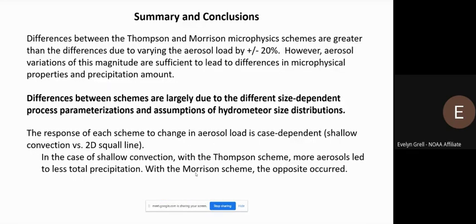To summarize: differences between the two microphysics schemes are greater than differences due to varying aerosol load by 20%. However, aerosol variations of this magnitude are sufficient to lead to differences in microphysical process properties and precipitation amount, which should lead to changes in the radiative response. The differences between schemes are largely due to different size-dependent process parameterizations and assumptions of hydrometeor size distributions, given the large uncertainty in the best way to parameterize these processes.